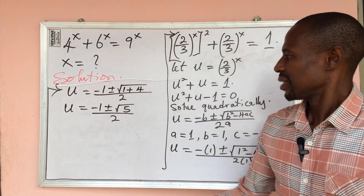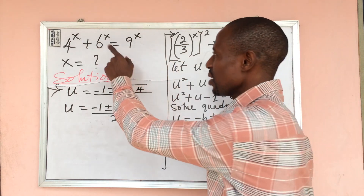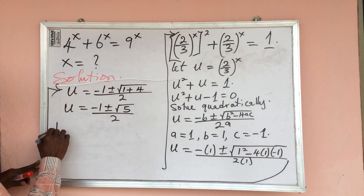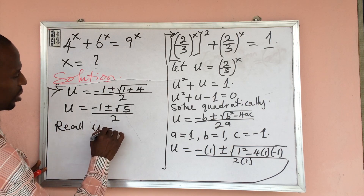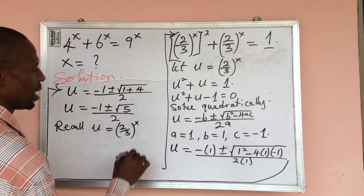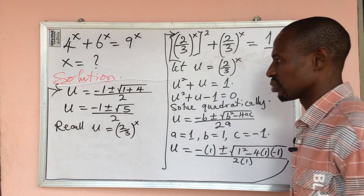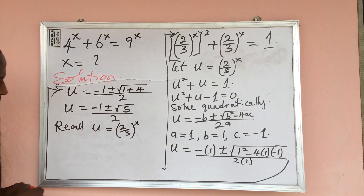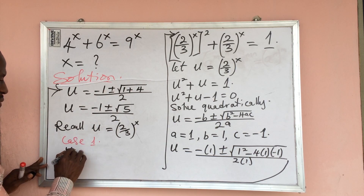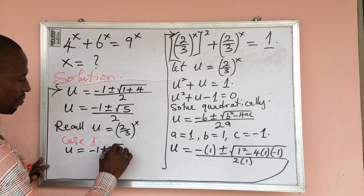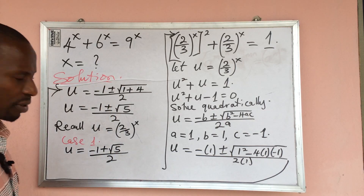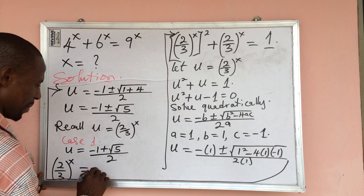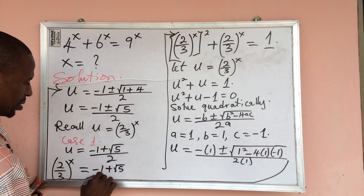Recalling that u equals 2 over 3 to the power of x, we now solve for x in two cases. Case 1: u equals minus 1 plus root 5, all over 2. So 2 over 3 to the power of x equals minus 1 plus root 5, all over 2. Taking the natural log of both sides and applying the power law of logarithms — bringing the exponent x forward — we get: x times ln(2/3) equals ln of the quantity minus 1 plus root 5, all over 2. Dividing by ln(2/3), x equals ln((−1 + √5)/2) divided by ln(2/3), which is approximately 1.1868.